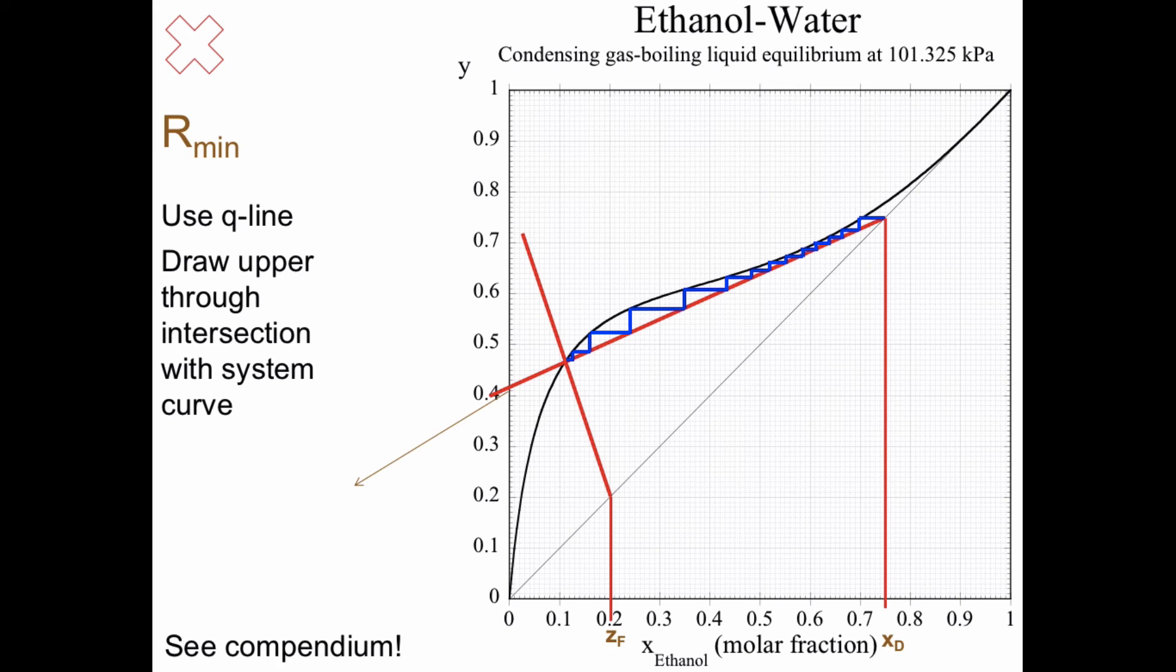And if you look at the intersection there, it's 0.42. And if X equals 0, then Y equals xD divided by R plus 1. So you can calculate R there as 0.76.